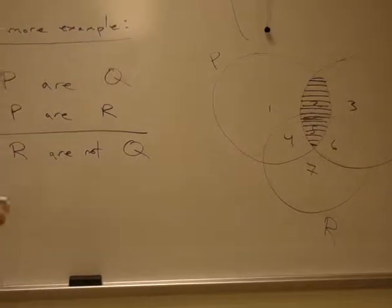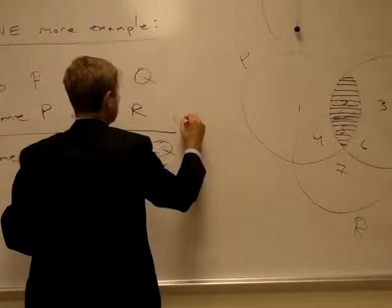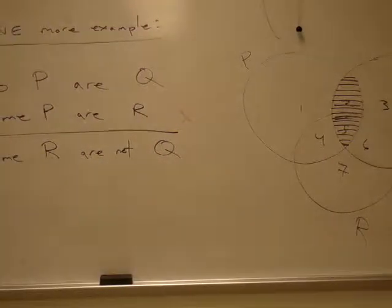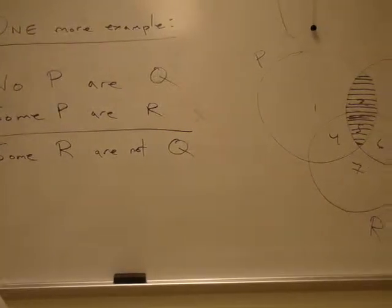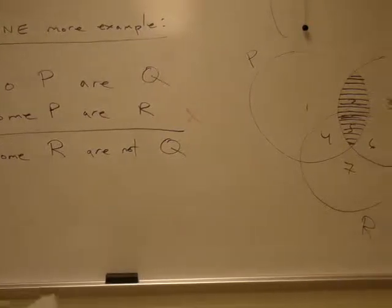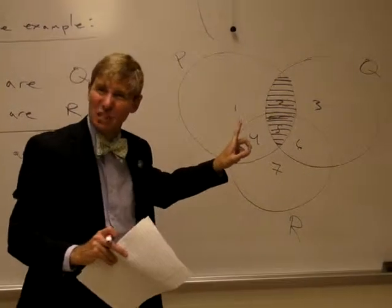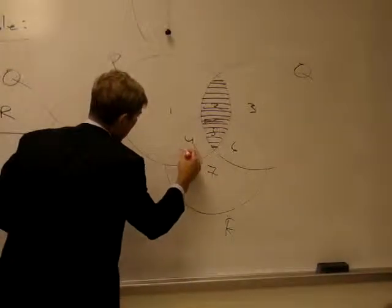Now where to place our X, since our second one is a statement of some, a particular affirmation. Some P are R. Let's see, so it's going to be some P that's also part of the class of things R. Here we go. Some P are R.